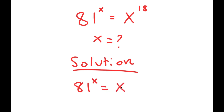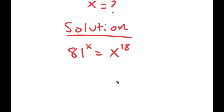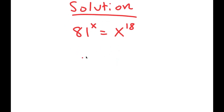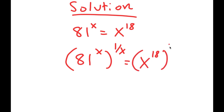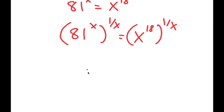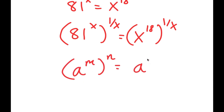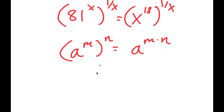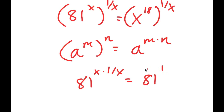So 81 to the power of x is equal to x to the power of 18. I'm going to take the power of 1 over x on both sides. So I get 81 to the power of x to the power of 1 over x is equal to x to the power of 18 to the power of 1 over x. Now, if I have something in the form a to the power of m to the power of n, this equals a to the power of m times n. So 81 to the power of x times 1 over x equals 81 to the power of 1, which is just 81.